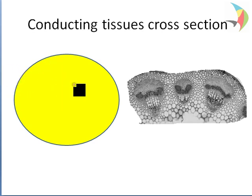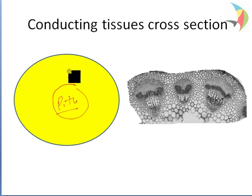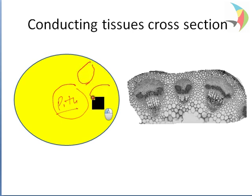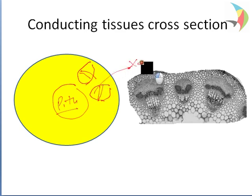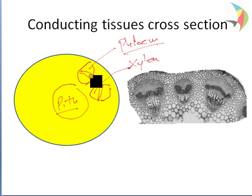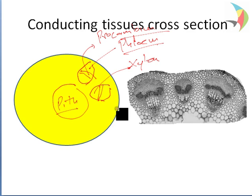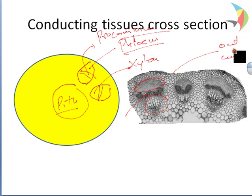Suppose this is the cross-section of a stem. In the middle part we have the outer cuticle, then the phloem and xylem tissues. The inner part is xylem and the outer part is phloem. The middle part that separates both is called the procambium.